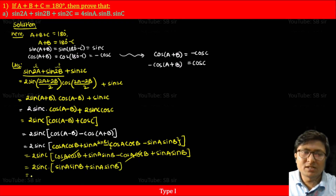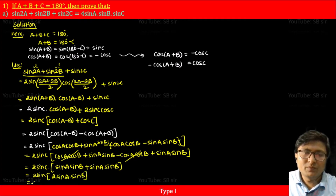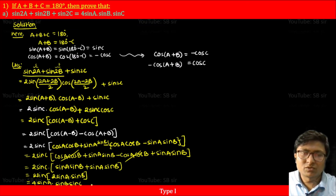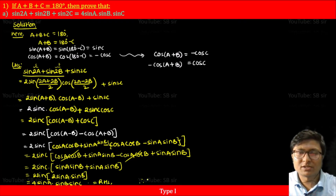Adding the terms inside the bracket gives 2sinA sinB. So we have 2sinC × 2sinA sinB = 4sinA sinB sinC. Rearranging in order of angles: 4sinA sinB sinC. This equals the right-hand side. Therefore, LHS = RHS. Proved.